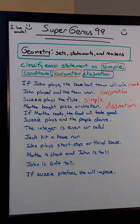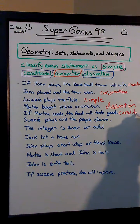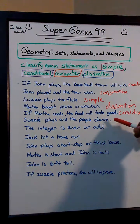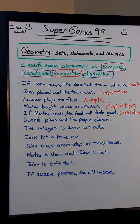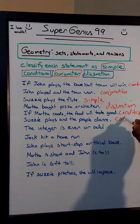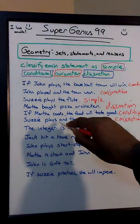How about the next one: 'If Martha cooks, the food will taste good.' Simple, conditional, conjunction, or disjunction? Conditional — usually if-statements are conditional. How about 'Susie plays and the people dance'? That is a conjunction. Usually 'and' will be the symbol of a conjunction.